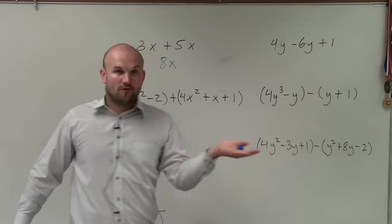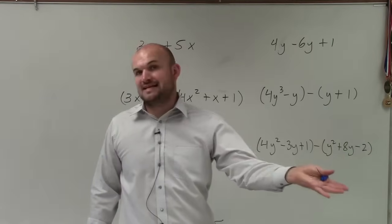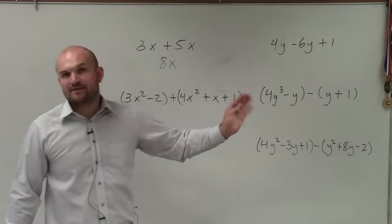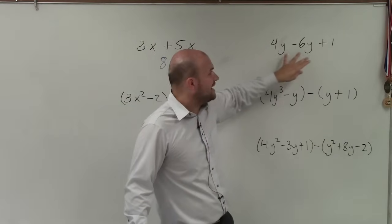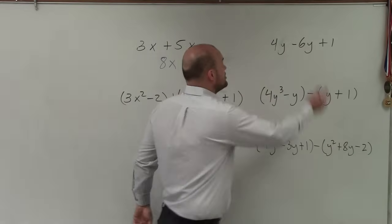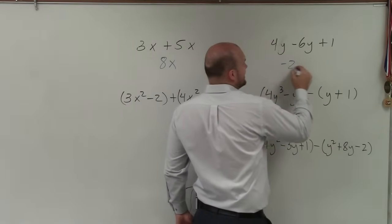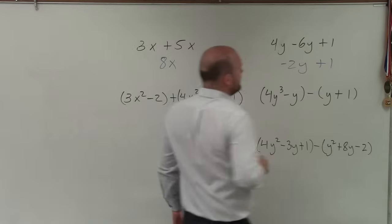In this case, you could say, well, I have four apples and I take away six apples, and then plus I have the number one there. So the number one is not going to affect it because it's not like terms. It doesn't have a variable factor y like these two terms do. So 4y minus 6y is negative 2y, and then I write just plus 1.